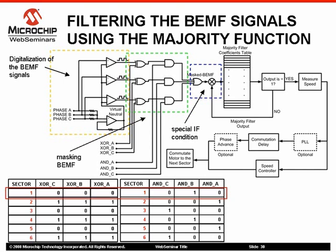The output of this condition is also used as an input to the majority detection filter. The 64 values represent the 26 possible combinations that the six-sample window could have for the active masked back EMF signal. Each value on the lookup table is a pointer to the next signal state over time. The filter is always looking for a true-to-false change at the output of the logic test condition.